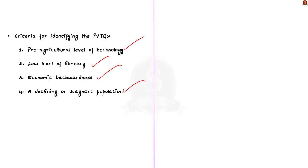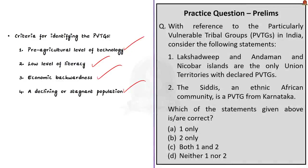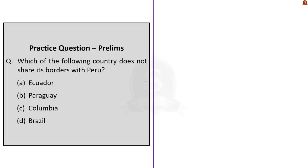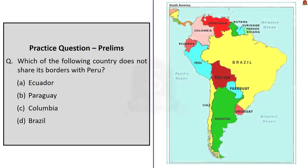With this we have come to the end of that discussion. Now the first practice question: Which of the following countries does not share its border with Peru? A: Ecuador, B: Paraguay, C: Colombia, D: Brazil. As we saw in the discussion, Peru shares borders with Ecuador, Colombia, Brazil, Bolivia, and Chile. It does not share a border with Paraguay. So the answer is Option B: Paraguay.